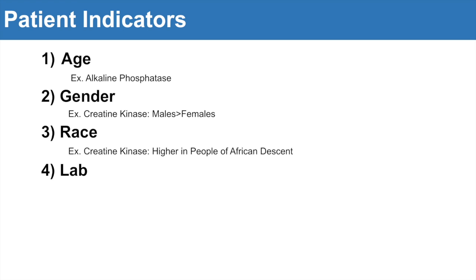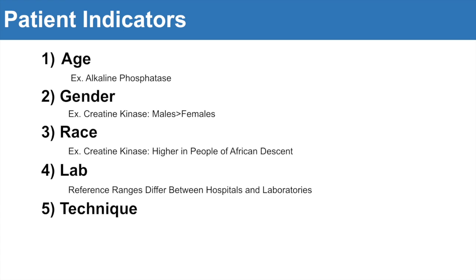Another factor — not quite related to the patient, but related to the lab in which the test is being performed — is that reference ranges differ between hospitals and laboratories, simply because each lab uses different equipment, may use different supplies, and they have different personnel. Additionally, the technique matters: for example, serum versus urine. If you take a measurement from the blood as opposed to the urine, things will be different. So we always have to think about how and where we're taking the sample.